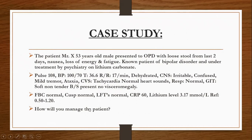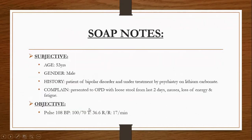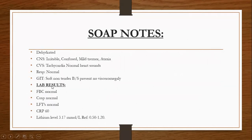How will we manage the patient using SOAP notes? In the subjective section, we mention the age, gender, history, and complaint — presented to OPD with loose stool for two days, nausea, loss of energy, and fatigue. In the objective section, we write all the checked parameters and lab reports including vitals and investigations.